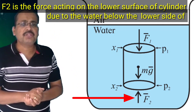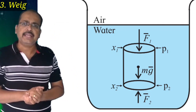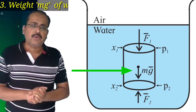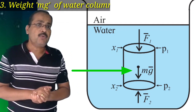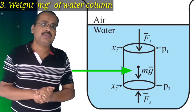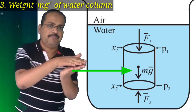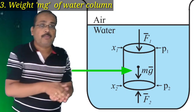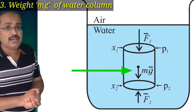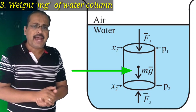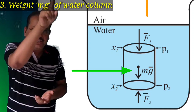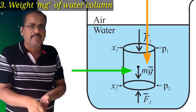The three forces acting on the cylinder are: number one, the force due to water above the upper surface; number two, the force acting on the lower surface due to water below the lower side of the cylinder; and number three, weight MG, acting vertically downward.